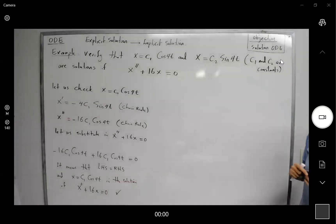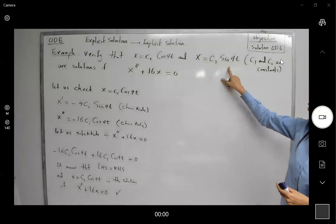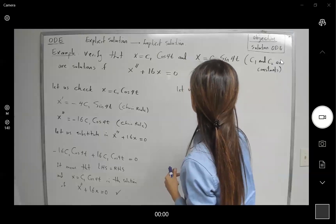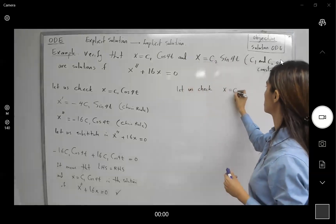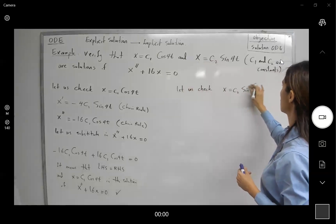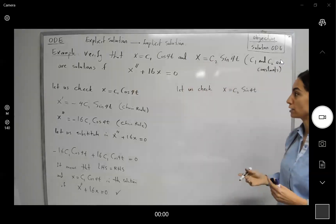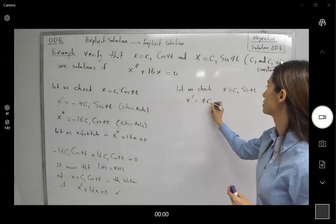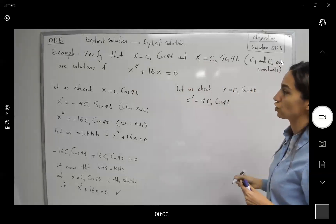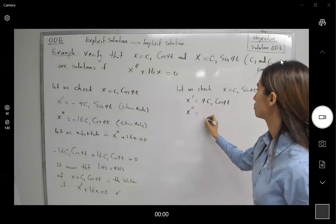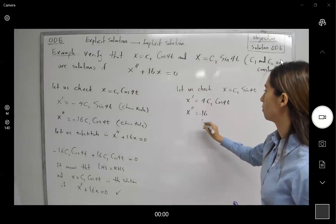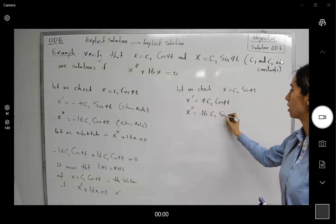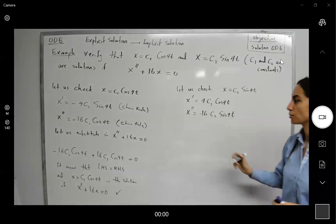What about the second one? X equals C sub 2 sine of 4t. Let us check. As you can see, we need the second derivative of x, so let us begin by taking the first derivative. It is equal to 4C sub 2 cosine of 4t — chain rule again. And the second derivative is equal to negative 16C sub 2 sine of 4t.